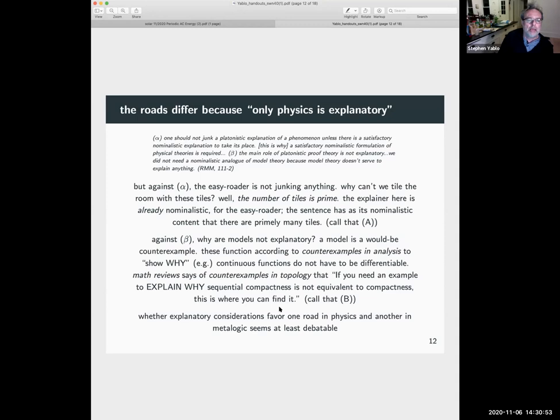And then Beta, the main role of Platonistic proof theory is not explanatory. We not need a nominalistic analog of model theory because model theory doesn't explain anything. But against the first point, it's not clear that the easy rotor is really junking any platenistic explanations. So to use my typically dumbed down example, why can't we tile the room with these tiles?